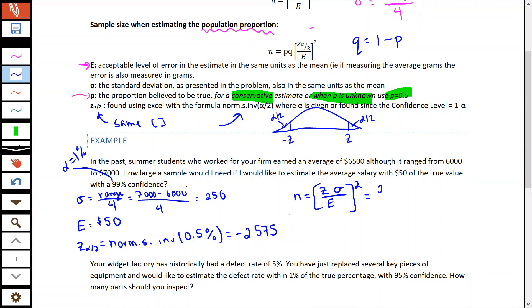Our Z value there, that 2.575, our standard deviation 250, and our error 50. We're going to square this whole thing. And what we get here is n being 165.8.